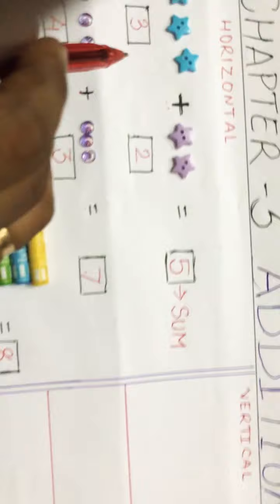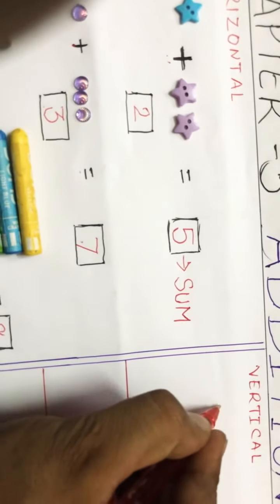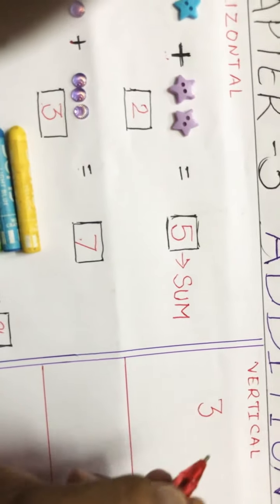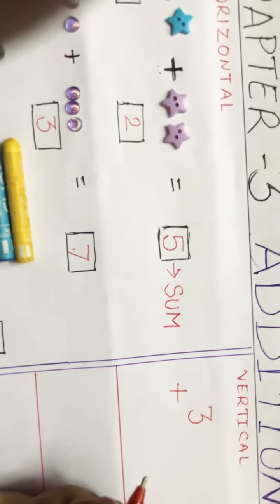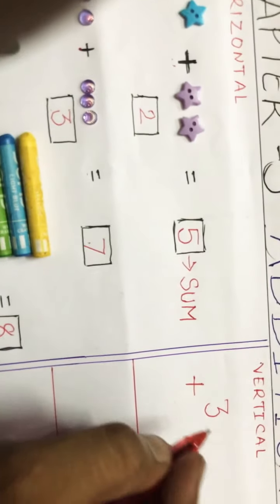Now let's write the numbers. We'll write three. We'll write the sign of plus, which means we're going to add.